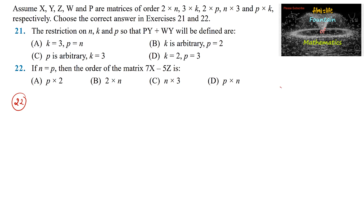X is a matrix of order 2 by N, Y is a matrix of order 3 by K, Z is a matrix of order 2 by P, W is a matrix of order N by 3, and P is a matrix of order P by K.